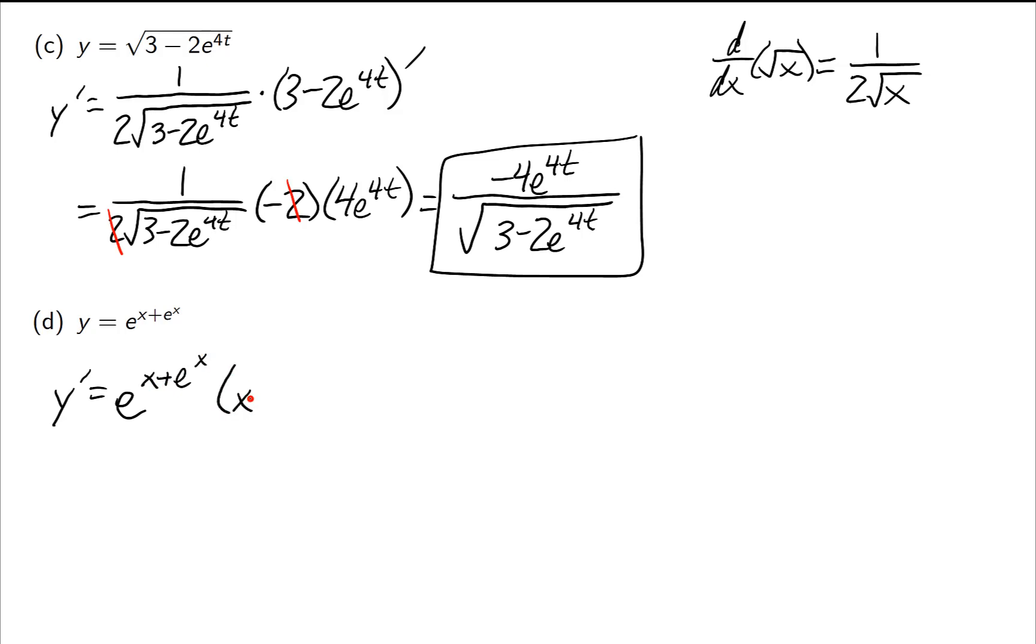x plus e to the x is my inside, then I'll multiply by the derivative of the inside. Now I know this looks a little funny with two e's floating around, but the exponent is just x plus e to the x, and that is your inside, whereas your outside is the e to some power. So then I get e to the x plus e to the x, and the derivative of x plus e to the x is 1 plus derivative of e to the x is e to the x, and I'll just leave this as my answer, even though it's a little bit weird looking.